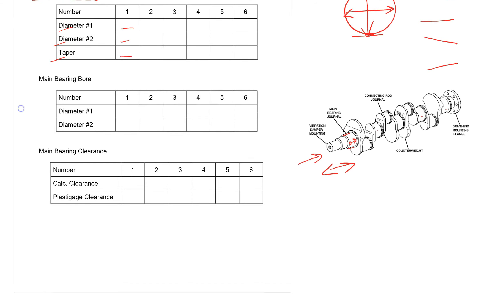The next thing we're going to look at is the main bearing bore. The main bearing bore is where the main bearing journals fit into the engine.